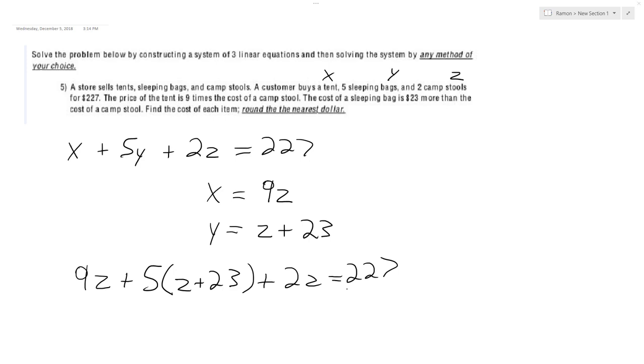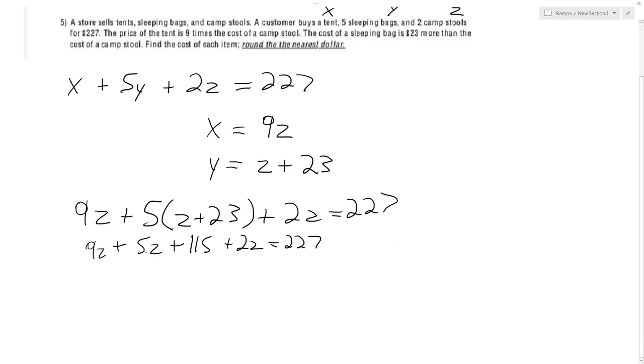Alright, continuing on here. So 9z plus 5z plus 115 plus 2z equals 227. So 9, 14, 16... 16z. And then 227 minus 115... divide by 16, we should end up with z equals 7.